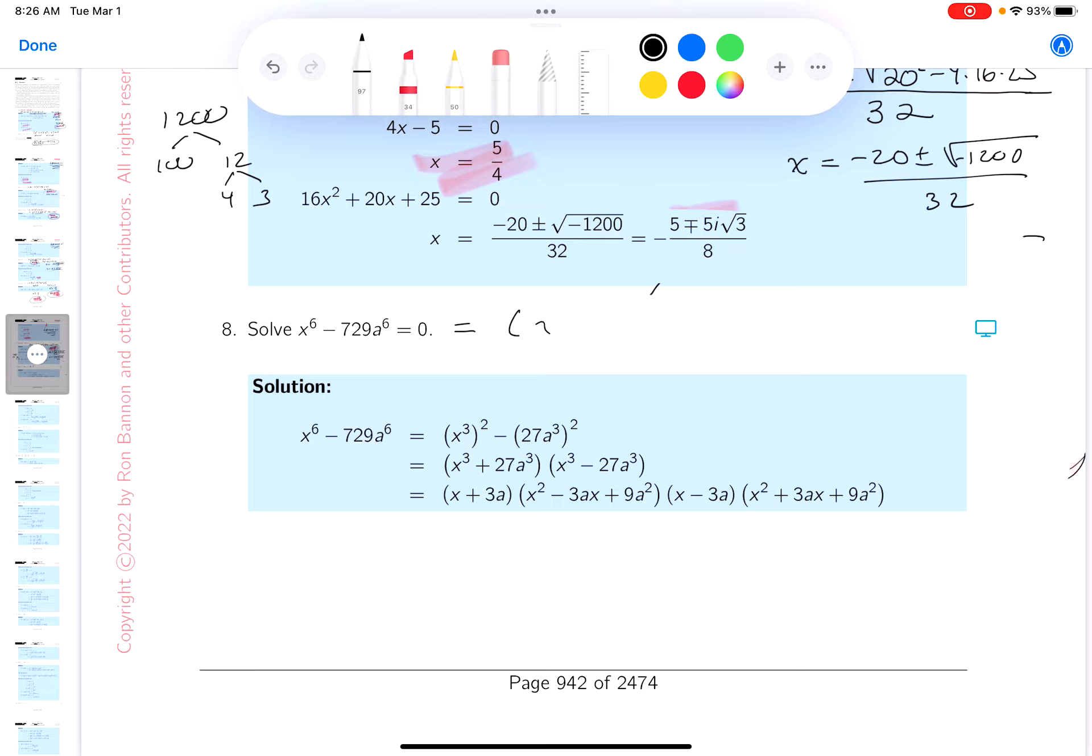So this would be x, I'm sorry, difference of perfect squares. x would be squared, right? Minus, well, 27 squared would give you 729.